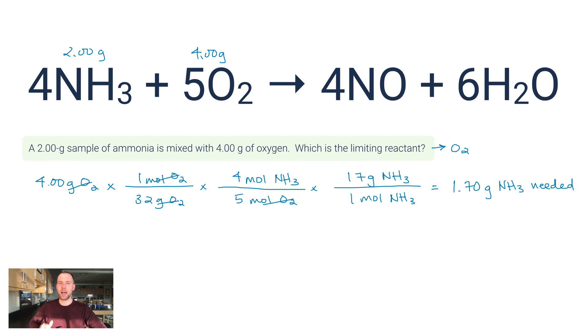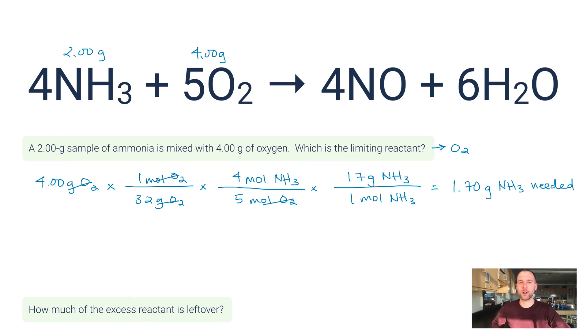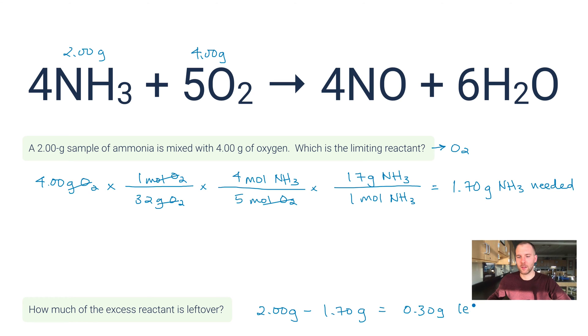A very common follow-up question to this is: how much of the excess reactant is left over? In this case, all you really have to do is compare the amount of your excess reactant to how much of the excess reactant was needed. I have 2 grams present. I only need to use 1.7 grams, and so this just becomes 0.30 grams left over.